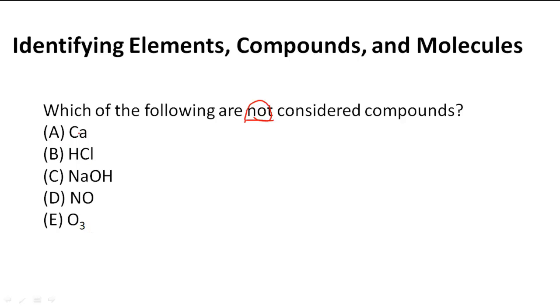So what we have here is all these options and we have to find out which one is not a compound. Well, HCl shows us right here that there's an H and there's a Cl, so two elements together which is a compound. So B cannot be one of ours.